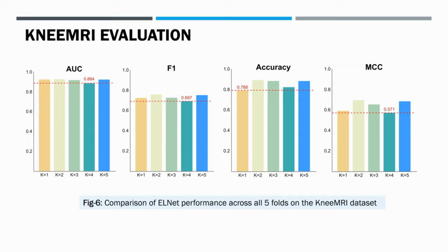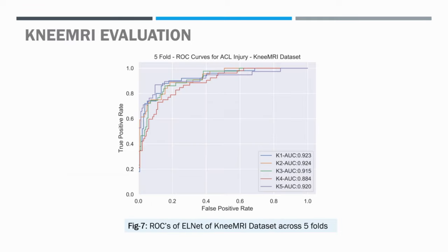Here, we evaluate LNET performance on the Knee MRI dataset using a five-fold cross-validation. As seen above, model performance was consistent across all five folds. In the original paper by Stager et al., an AUC of 0.894 was reported using an SVM classifier. In the paper by Bien et al., an AUC of 0.911 was achieved. In our work, we obtained an average of 0.913, with three of the five folds exceeding 0.92, the best being 0.924.